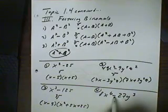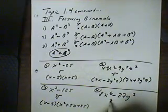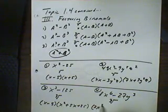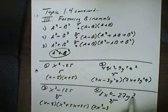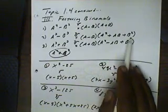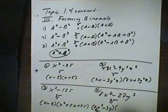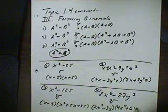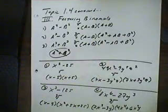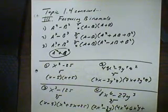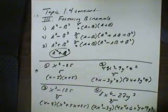Next: 8x to the 6th minus 27y to the 3rd. This also looks like a difference of cubes. The cube root of 8 is 2, the cube root of x to the 6th is x squared, the cube root of 27 is 3, and the cube root of y to the 3rd is y. So the first factor is (2x squared minus 3y). For the second factor: square 2x squared to get 4x to the 4th, then multiply A times B to get plus 6x squared y — note we're not using the negative here, since the pattern must be negative, positive, positive. Finally, B squared gives plus 9y squared. So the answer is (2x squared minus 3y)(4x to the 4th plus 6x squared y plus 9y squared).